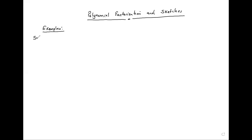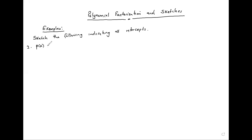Examples: sketch the following, indicating all intercepts. Number 1: P of x is equal to x cubed minus 2x squared minus 1.